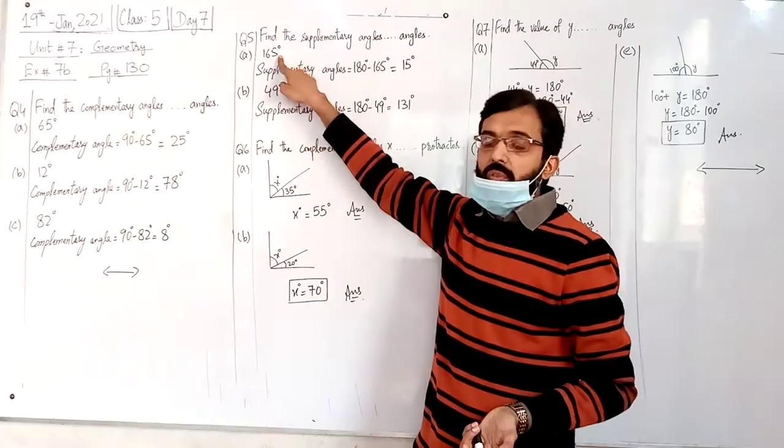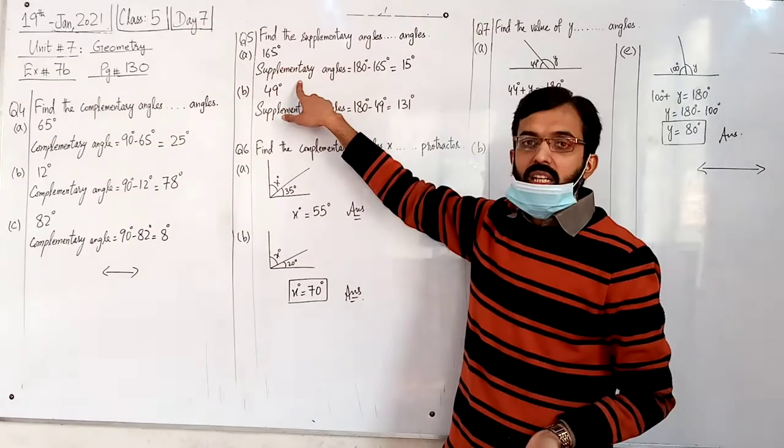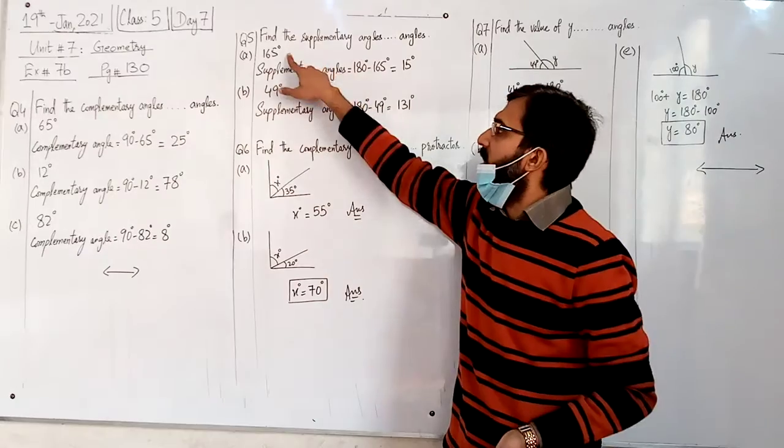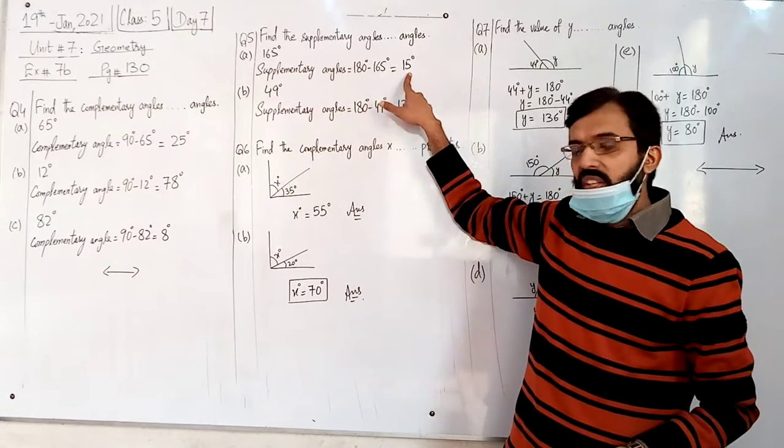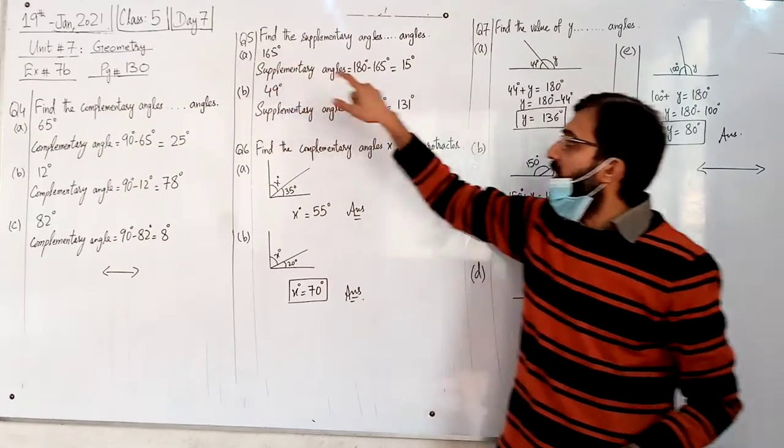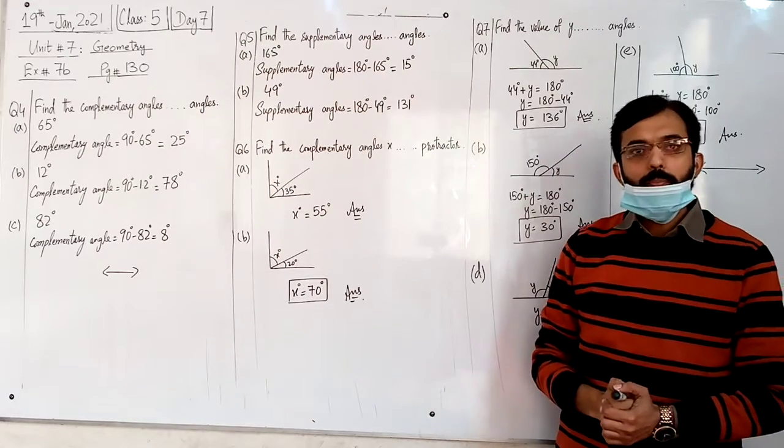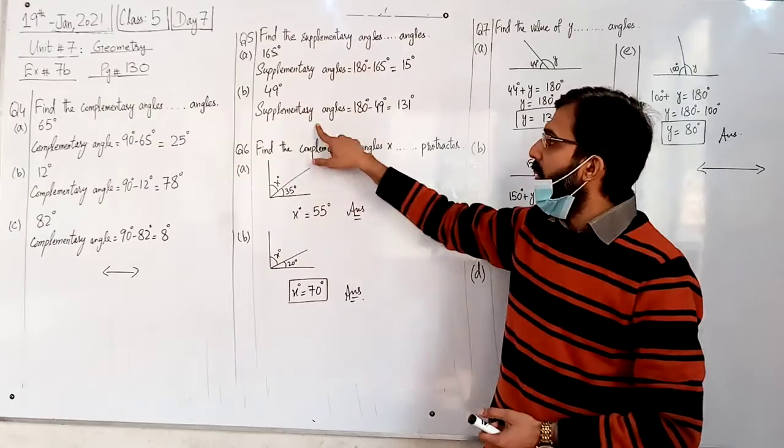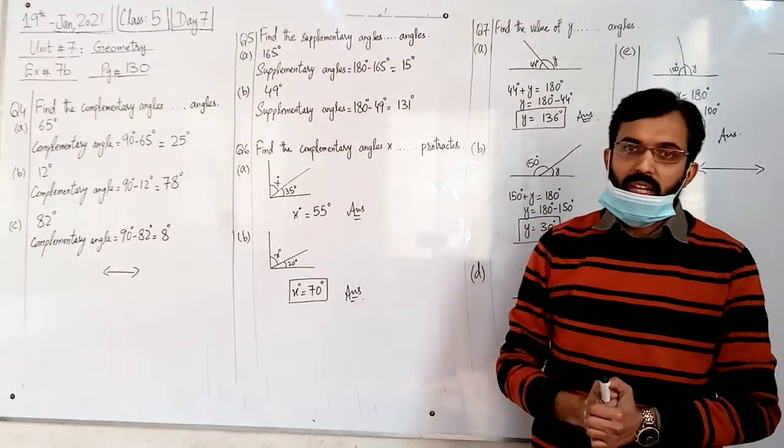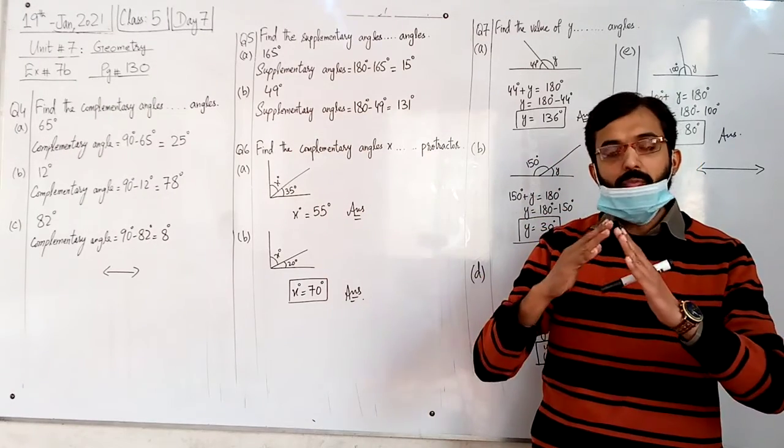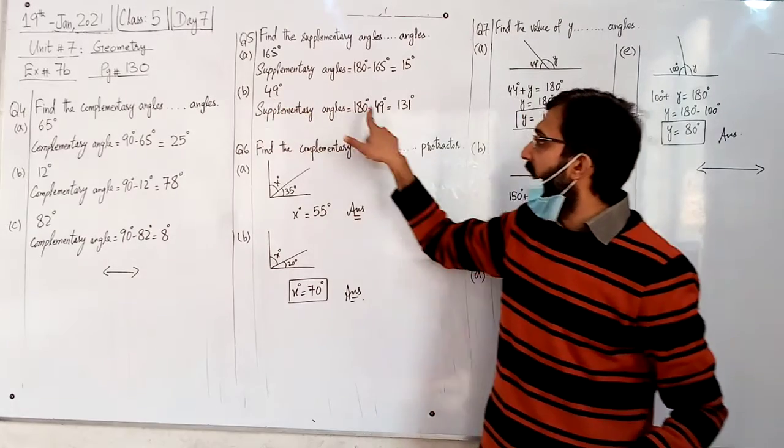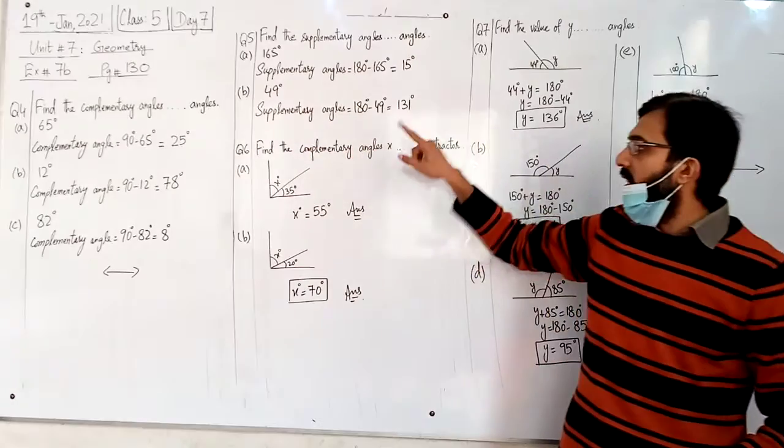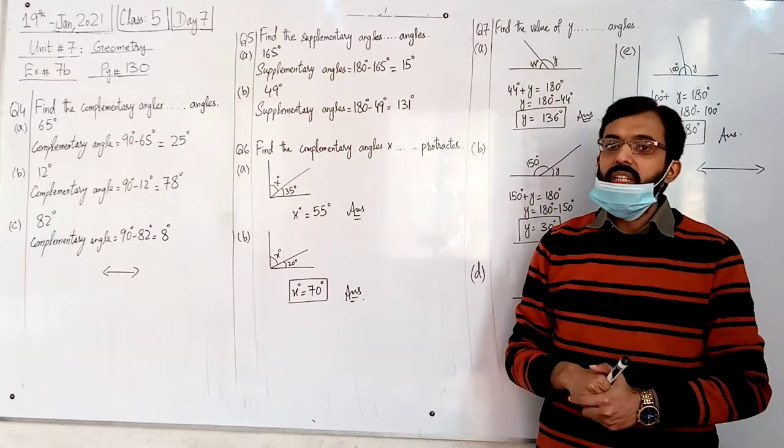If two angles sum to 180 then it is a supplementary angle. You will find the supplementary angle. If the angle is 49 degrees, then the supplementary angle is 131 degrees.